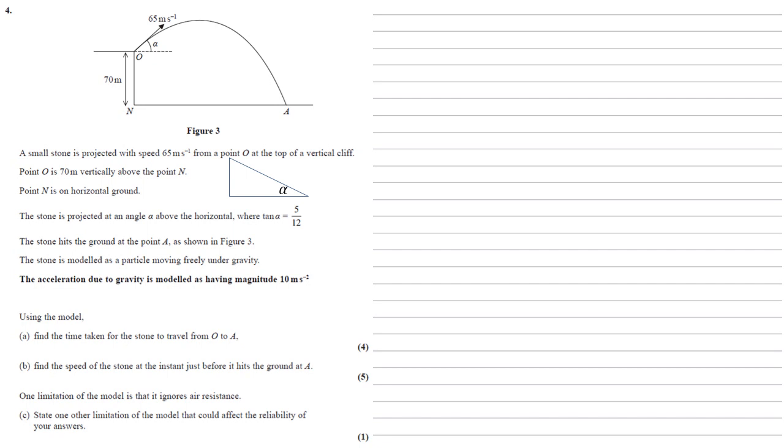there's our alpha. Tan is equal to opposite over adjacent. So the opposite side is 5, the adjacent is 12.